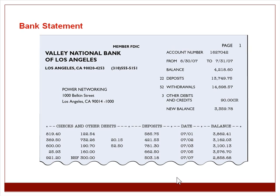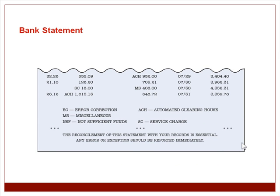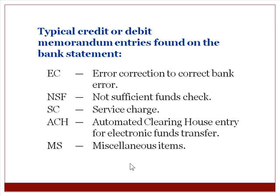A bank statement is a summary received from the bank of all checking account transactions. It includes automatic deposits, manual deposits, checks, EFTs, interest earned, and more, so you need to do a bank rec on the bank account. Looking at a typical bank statement example, you can see the date, total deposits, total withdrawals, and all the detail. Typical credit or debit memorandum entries on a bank statement include error corrections, non-sufficient funds (NSF), service charges, automated clearinghouse entries for EFTs, and miscellaneous items.